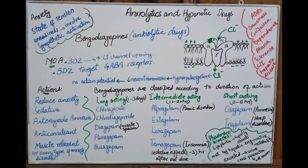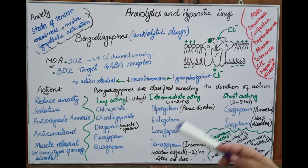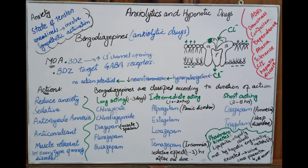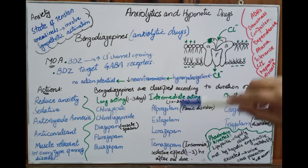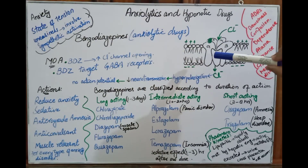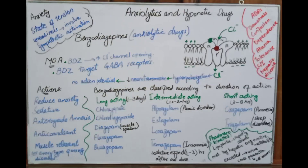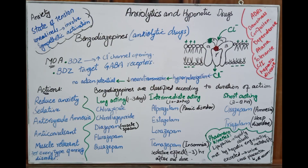Benzodiazepine is the drug of choice for anxiety — it is an anti-anxiety drug also used for the treatment of insomnia. Mechanism of action: benzodiazepines bind on the GABA receptor. GABA is the inhibitory neurotransmitter that inhibits the action potential. The GABA receptor has subunits: alpha, beta, and gamma. GABA binds with the beta-alpha interface and benzodiazepines bind with the alpha-gamma interface.